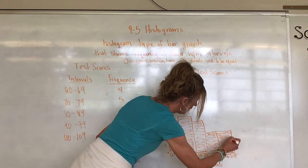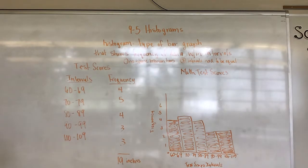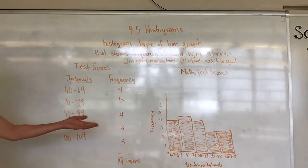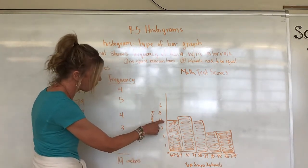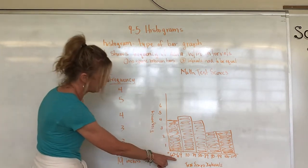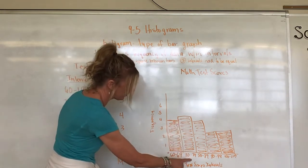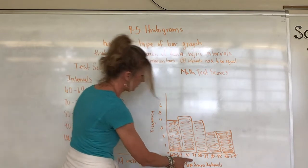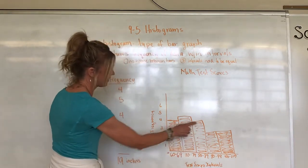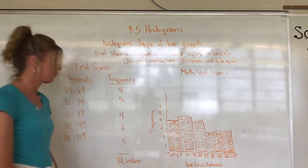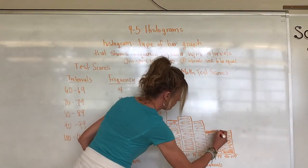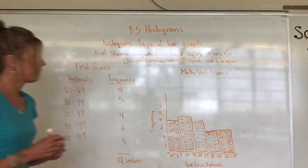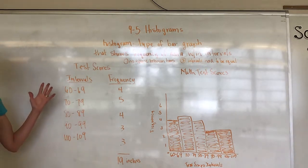So now we've created our histogram that goes along with our test score intervals and frequency. So based on this information, our bar graph shows us, if I'm looking and I'm a teacher and I look to see kids that scored between 60 and 69, there was four of them. Is that too high? Is that too many? What happened there? 70 to 79. That's right there in that C range. We had five that scored that. Five in the C range, in the B range, we're back down to four in the A range. That was our three. And then over that.